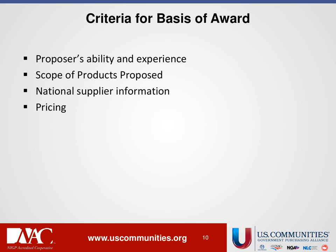As far as evaluation factors, we looked at the proposer's ability and experience — making sure companies had the capability to service potentially 55,000 public agencies. We also looked at the scope of products proposed, the variety and practicality of products for public agencies, U.S. Communities national supplier information, and lastly — but very importantly — pricing. We had firm fixed prices for each tractor and mower in each category, scored on an objective formula for an apples-to-apples comparison between all proposers.